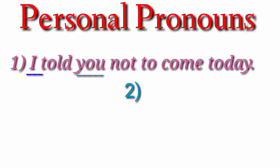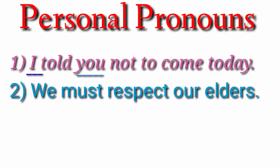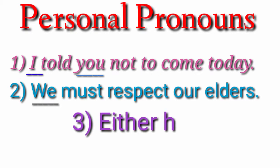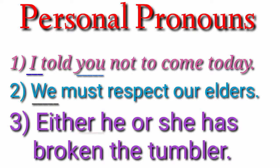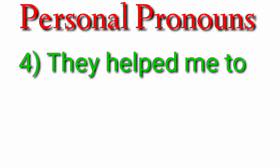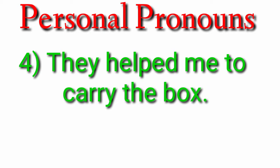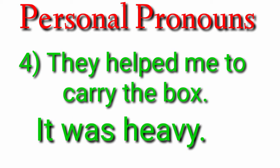Second example: 'We must respect our elders.' Here, 'we' is a personal pronoun. 'Either he or she has broken the tumbler.' Here, 'he' and 'she' work as personal pronouns. 'They helped me to carry the box. It was heavy.' In these sentences, 'they', 'me', and 'it' are all personal pronouns.